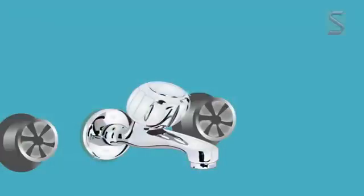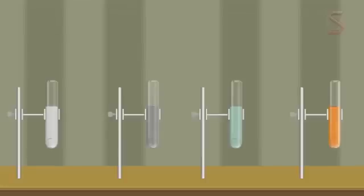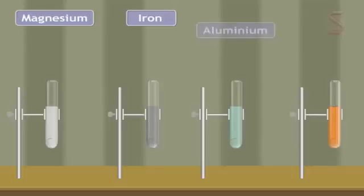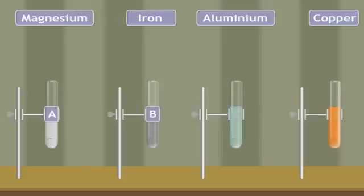Metals react with acids such as hydrochloric acid and sulfuric acid to give out hydrogen gas. Let's take four different metals: magnesium, iron, aluminum, and copper in four different test tubes A, B, C, and D respectively. To these test tubes, we add five milliliters of dilute hydrochloric acid or sulfuric acid using a dropper. We can now heat the test tubes gently using a Bunsen burner.